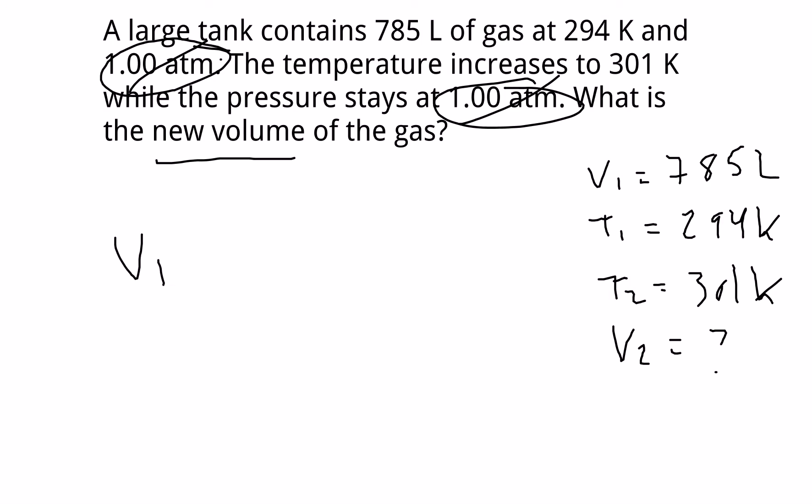V1 over T1 equals V2 over T2, right? So let's go and fill these in. V1 and T1, we have those values. And then T2 we have, but we need V2. So let's go and fill each of these in.